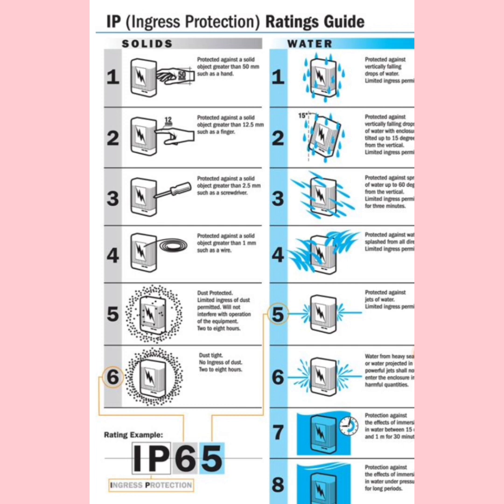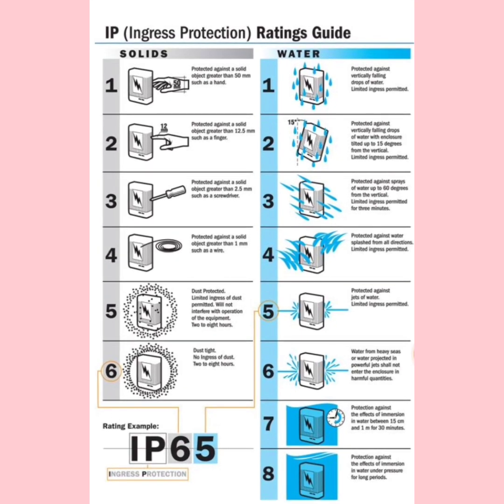Numbers five and six are very important: number five means dust protected, whereas number six means dust tight. Similarly, for water protection, number one talks about protection against vertically falling drops.